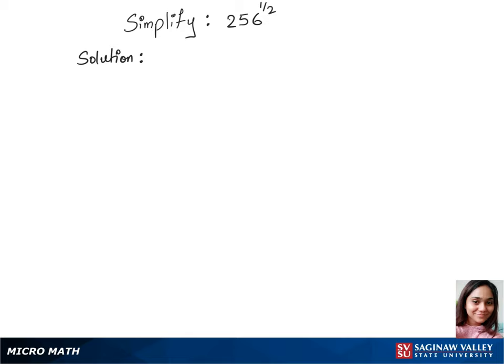To simplify 256 to the power 1 over 2, we will first write the base 256 as 4 to the power 4, which is 256, whole power 1 over 2. Now this looks exactly like the exponent formula.